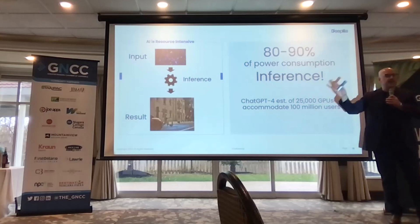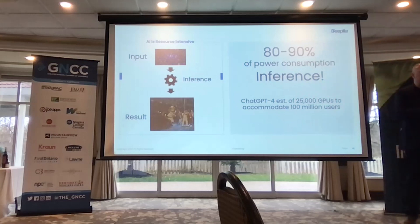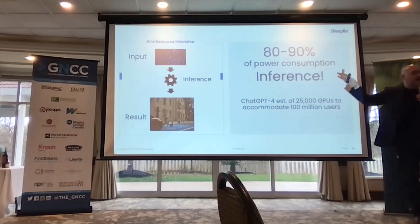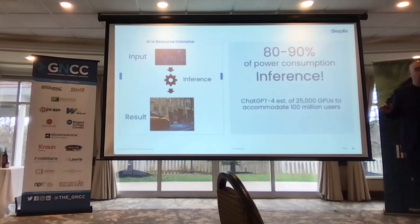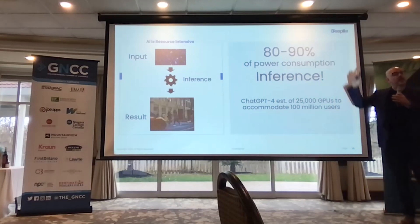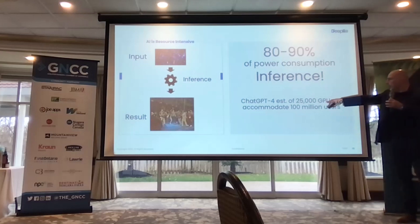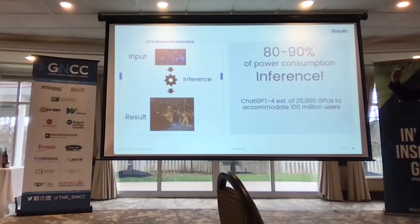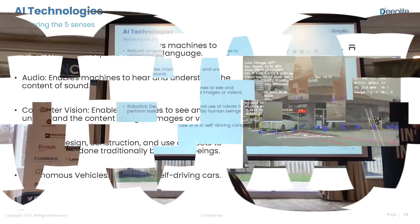We're in a transition phase — the last five or six years there's been a ton of training going on because we're still in the infancy. The use of AI is just starting to happen, especially now that it's getting into everybody's hands through the tools being built. They're predicting inference costs will be 80 to 90 percent of total AI spend. Imagine once we start using AI at scale across billions of people — ChatGPT-4 is estimated to need about 25,000 H100s just to accommodate 100 million users.